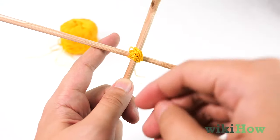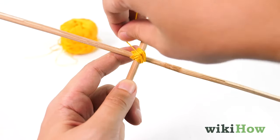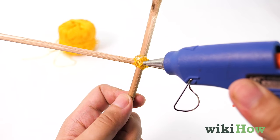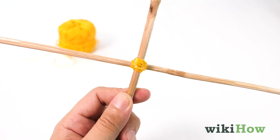Wrap string around the point where the two dowels meet and use hot glue to cover the string and seal the two dowels together. Wait a few minutes for the hot glue to dry.